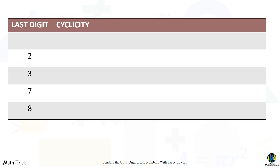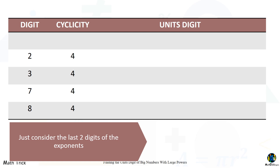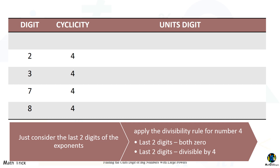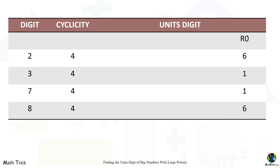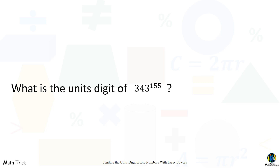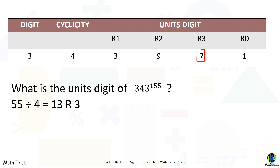For big numbers ending in 2, 3, 7, and 8 with large powers, the cyclicity is four. For mental calculation, just consider the last two digits of the exponent, then apply the divisibility rule for four. If the last two digits are both zero, or if they are divisible by four, use the corresponding last digit. If there is a remainder, the unit's digit depends on the remainder value. Example: what is the unit's digit of 343 to the 155th power? The last two digits of the exponent are 55. Fifty-five divided by four is thirteen remainder three. The unit's digit of 343 to the 155th power is seven.